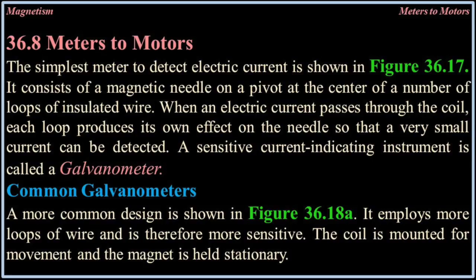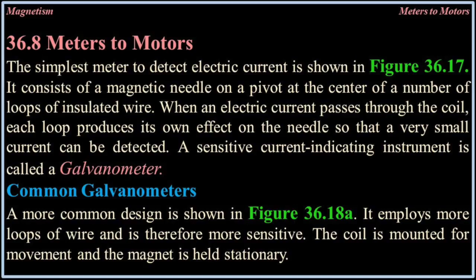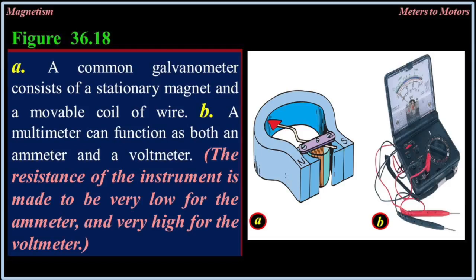36.8 Meters to motors. The simplest meter to detect electric current consists of a magnetic needle on a pivot at the center of a number of loops of insulated wire. When an electric current passes through the coil, each loop produces its own effect on the needle so that a very small current can be detected. A sensitive current-detecting instrument is called a galvanometer.